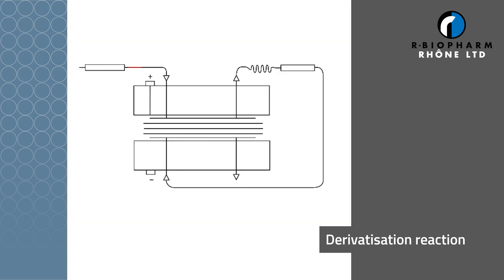The mobile phase and toxin pass through the analytical column and into the COBRA cell. The reaction takes place on the top of the membrane within the COBRA cell, where bromine is generated from the mobile phase. The bromine binds to the aflatoxin molecule, changing the structure and enhancing fluorescence. This then passes through the detector.